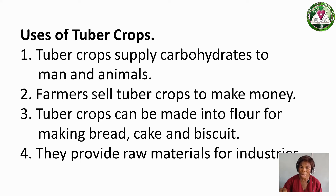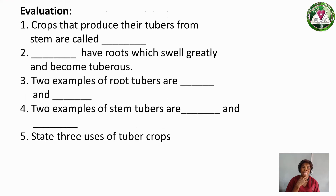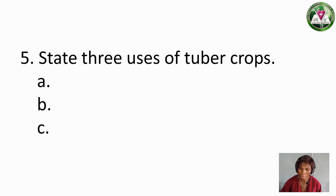Tuber crops supply us almost half of what we need in life. Now, the assignment: Number 1 — Crops that produce their tubers from the stem are called ___. Number 2 — ___ have roots which swell greatly and become tuberous. Number 3 — Give 2 examples of root tubers and 2 examples of stem tubers. Number 4 — State 3 uses of tuber crops.